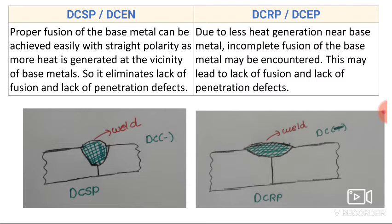Proper fusion of the base plate can be achieved easily with straight polarity as more heat is generated in the vicinity of the base metal. This eliminates lack of fusion and lack of penetration defects. As maximum heat is generated at the work piece, there is proper fusion of the base plate.